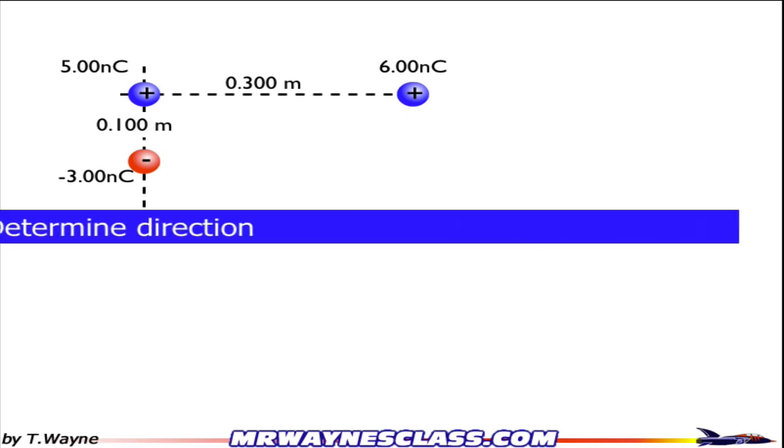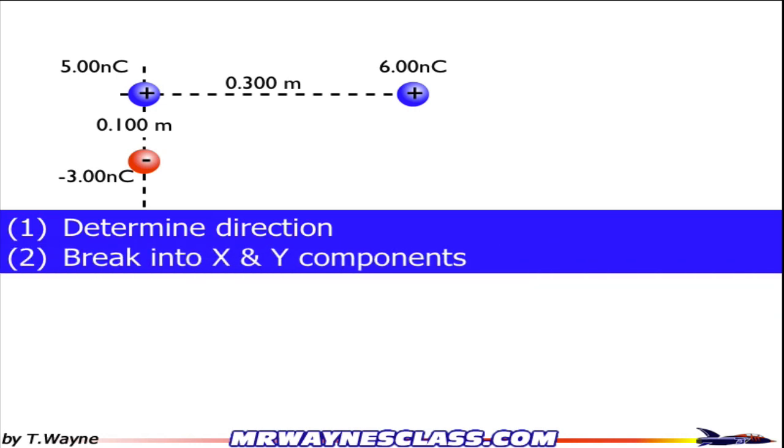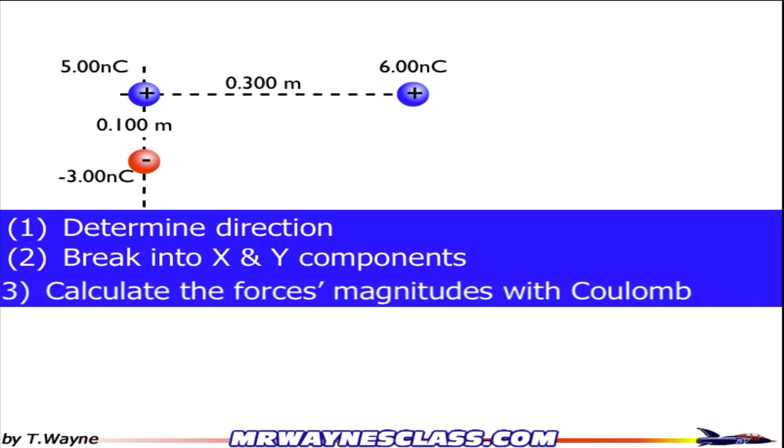To begin with, let's look at the steps you're going to be taking. You've got to determine the direction of the force generated by each charge on the 6 nanocoulombs. You'll have to break this into x and y components. You'll have to calculate the force's magnitudes with Coulomb's law.